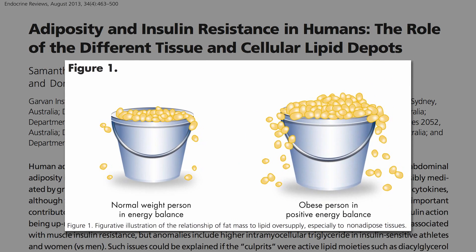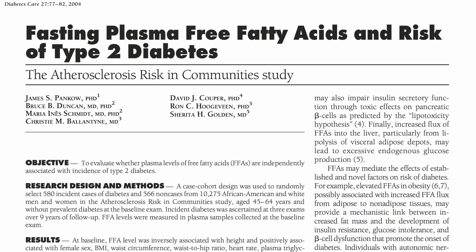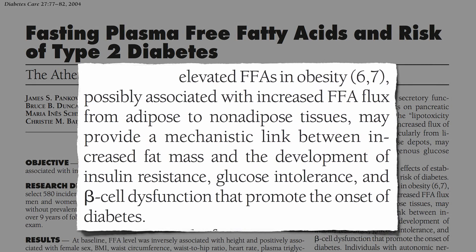Not only does an obese person have more fat on their bodies, but they're constantly spilling that fat into their bloodstream. So that could be the link between obesity and diabetes: fat is spilling out from our fat cells and gets lodged in our muscle cells, leading to the insulin resistance that promotes the onset of type 2 diabetes.